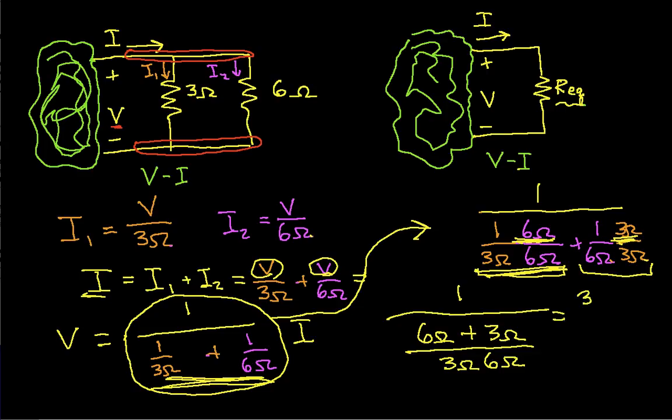And now 1 over this fraction is just going to be the inverse of this fraction, which is 3 ohms times 6 ohms over 6 ohms plus 3 ohms, okay? So this is actually a much nicer formula to work with. It basically gives me now the equivalent resistance of these two parallel resistors. And if I work out the math, the top ends up being 18 and the bottom ends up being 9. 18 divided by 9 is 2 ohms. So in this example, I know that the equivalent resistance of these two parallel resistors is 2 ohms.